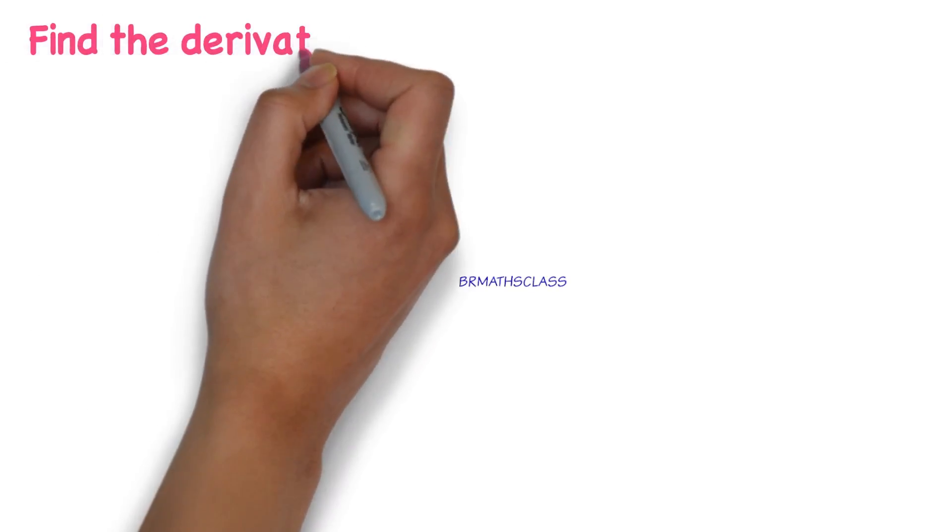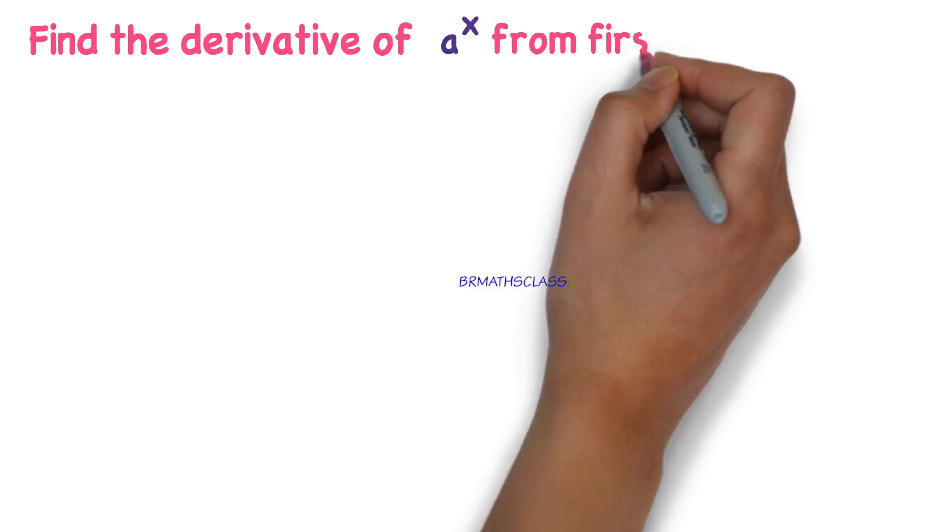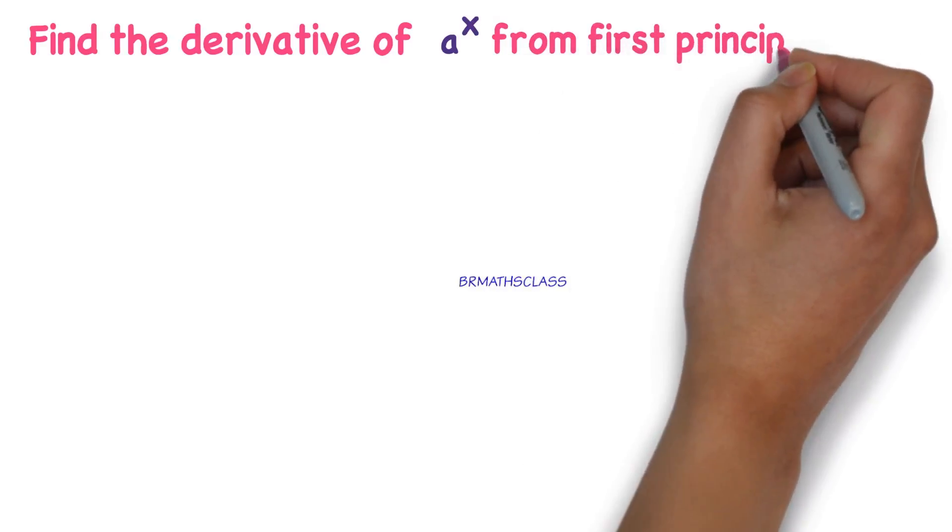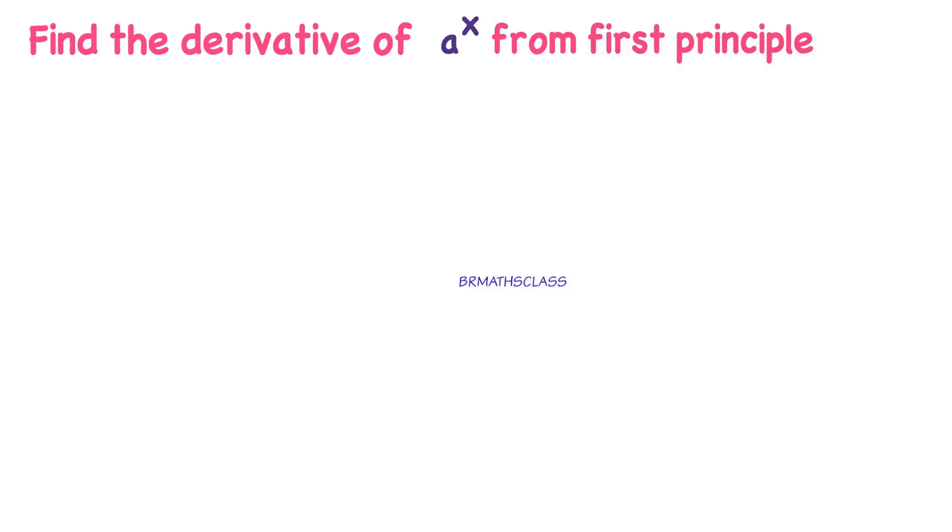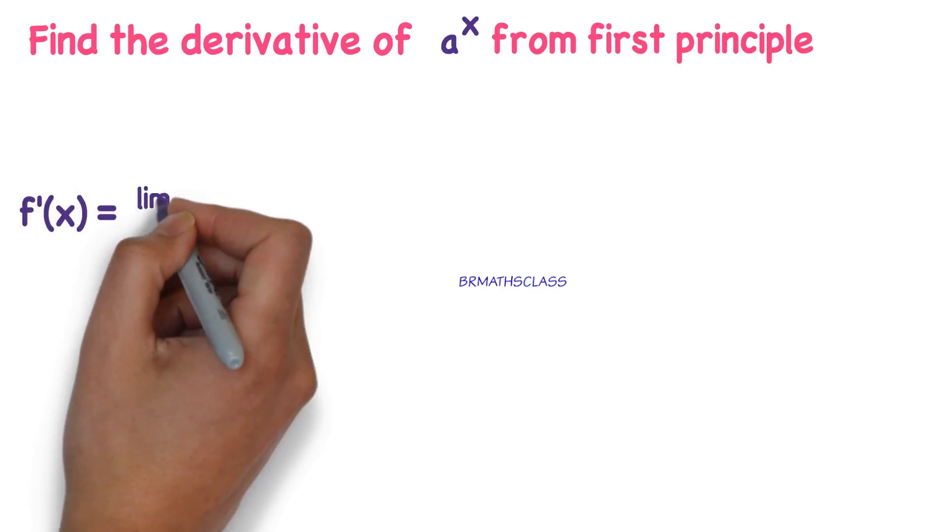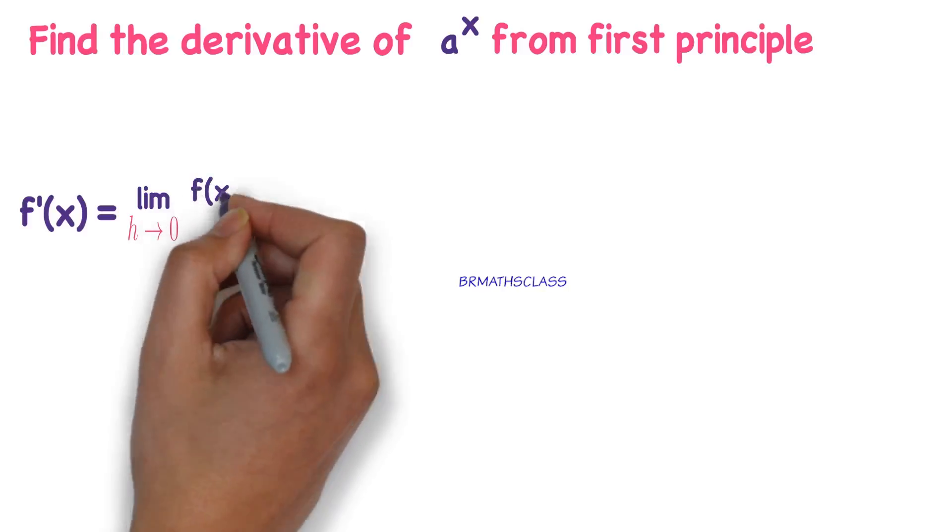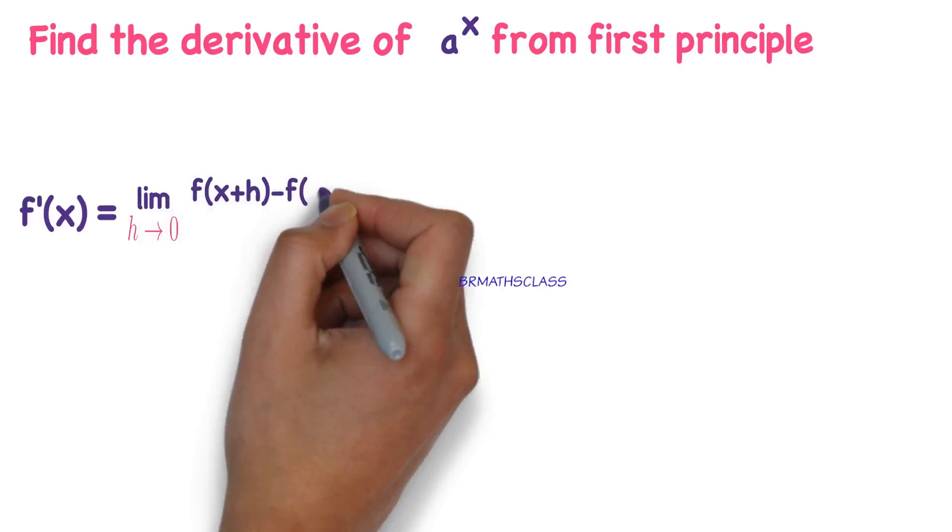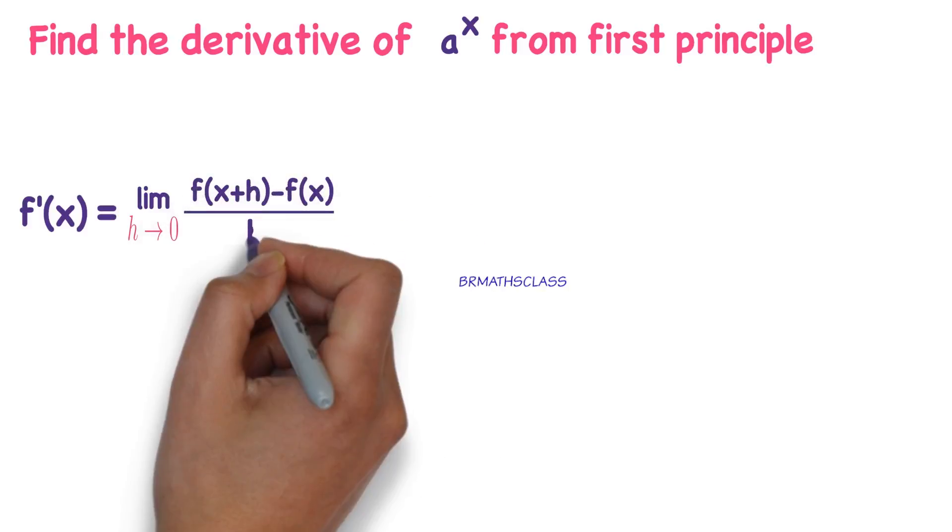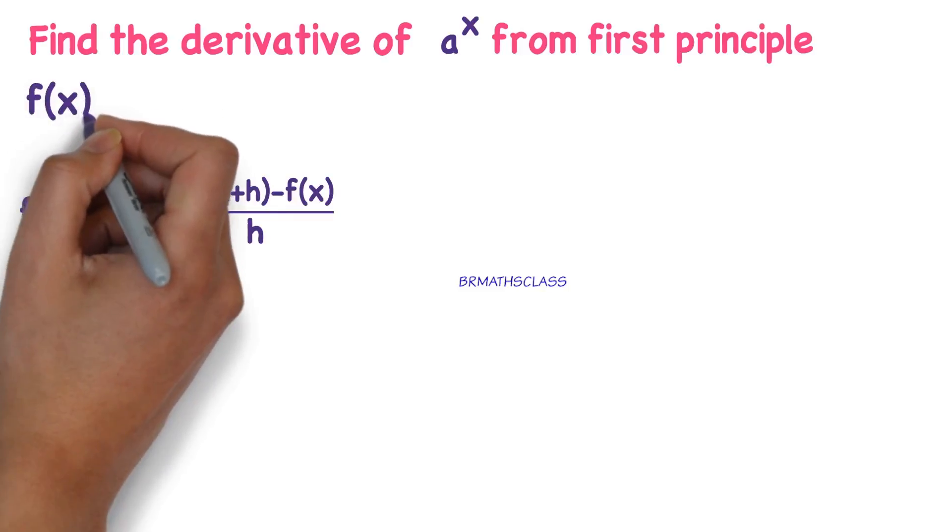Find the derivative of a power x from first principle. What is first principle? We know that f dash of x equals to limit h tends to 0, f of x plus h minus f of x divided by h. This is called first principle of derivative.